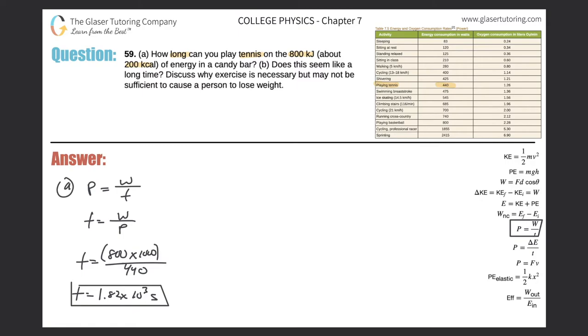If we take our answer in seconds, put seconds on the bottom, hour on the top. Remember that there's 3600 seconds in an hour, and therefore I can convert this to hours. So it's basically 1.82 times 10 to the third divided by 3600. This works out to about a half an hour, 0.506 hours.